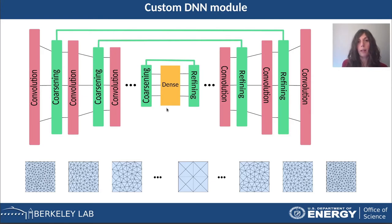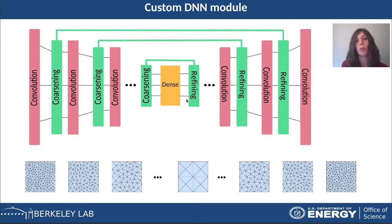After reaching this small graph, we apply a fully connected neural network to the features and then revert the process. We start refining, applying convolution, refining, convolution, and so on, until the graph is the same as the initial one. The things that change are the features of the nodes.